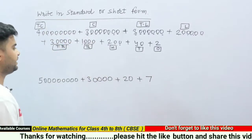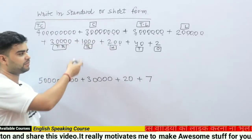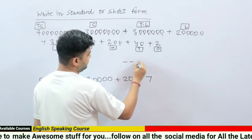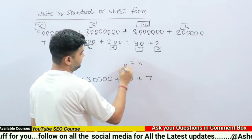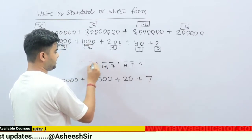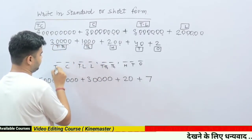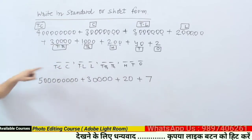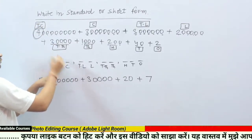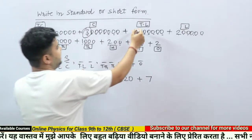Now I will write a place value chart and arrange these numbers in that chart. The chart has columns: ones, tens, hundreds, thousands, ten thousands, lakh, ten lakh, crore, and ten crore. Ten crore stands for 4, so I will write 4 there. Crore is for 3, so write 3 there. Ten lakh is 3, so write 3 there.